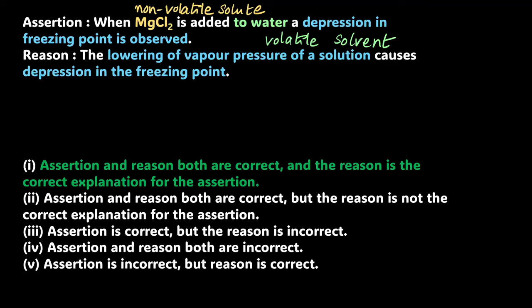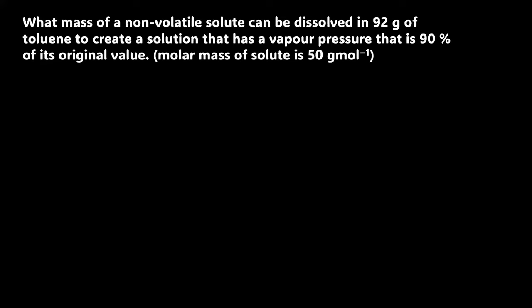Let's take it up a notch. We're going to solve a numerical now. What mass of a non-volatile solute can be dissolved in 92 gram of toluene? That's the solvent. To create a solution that has a vapor pressure that is 90% of its original value. 90% of its original value. What do we need to do here? I'm going to highlight things that you need. Pause the video here and try and solve this question. Clearly, one is a solvent, two is a solute. This is where you pause.